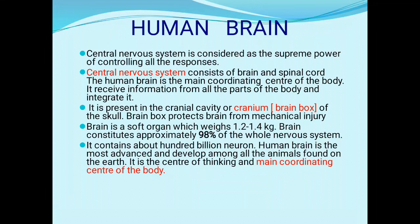The nervous system is made of neurons, also called nerve cells. The brain contains about 100 billion neurons. The human brain is the most advanced and most developed among all animals, and it is the center of thinking and the main coordinating center of the body.